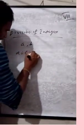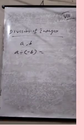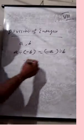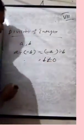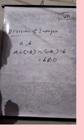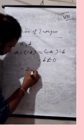When we divide a positive integer by a negative integer, we first divide them as whole numbers and then put a minus sign before the quotient — we get a negative integer. In general, if a and b are integers, a divided by minus b equals minus a divided by b, where b is not equal to zero.